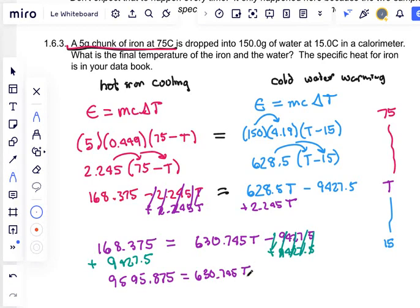If I want T alone, now I have to get rid of the 630.745. So divide both sides by 630.745 and we get the final temperature is 15.21 degrees.